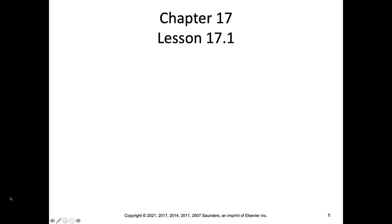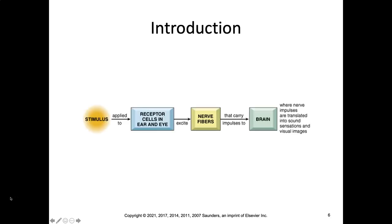If you want to follow along in your textbook, we are on page 649 and moving into page 650. A stimulus is applied to the receptor cells in our ear and eye. Those excite nerve fibers that carry impulses to our brains, where those nerve impulses are then translated into sound sensations and visual images.